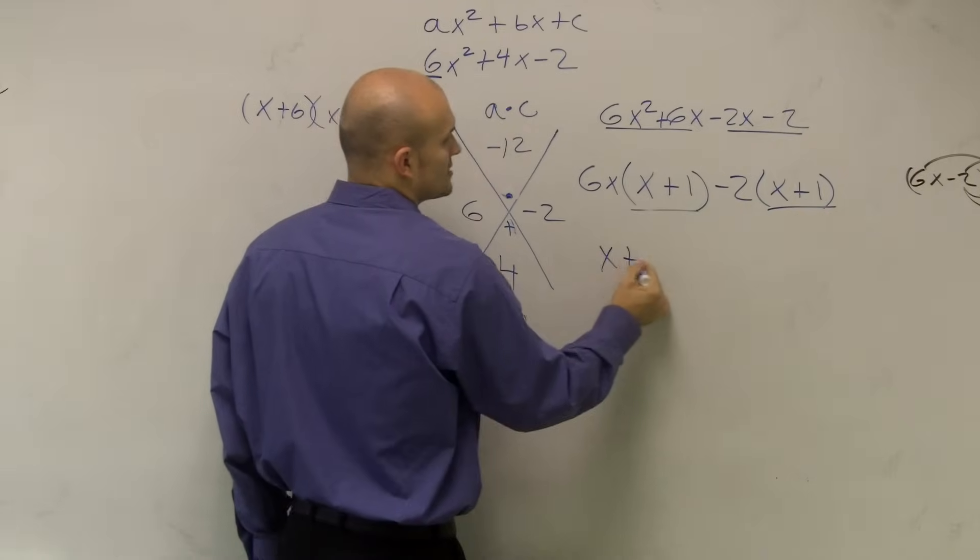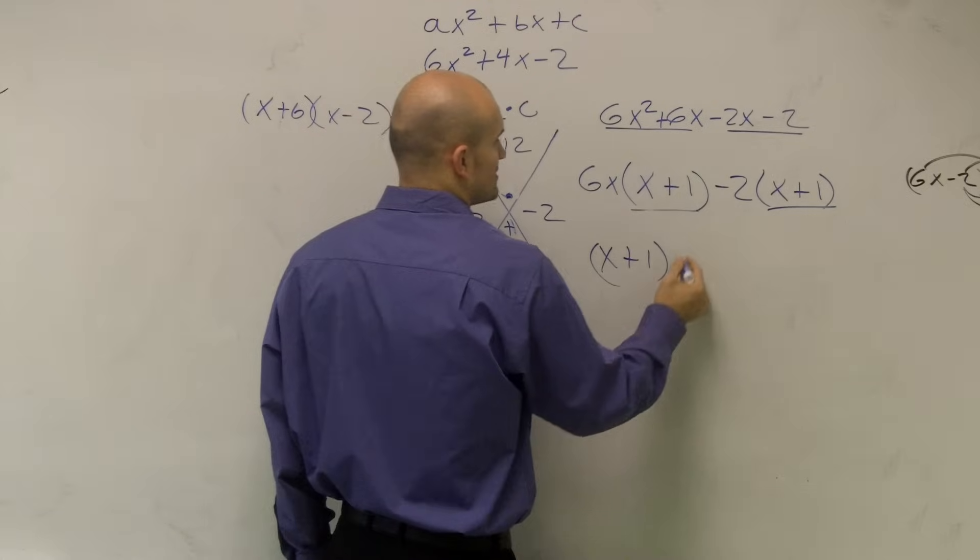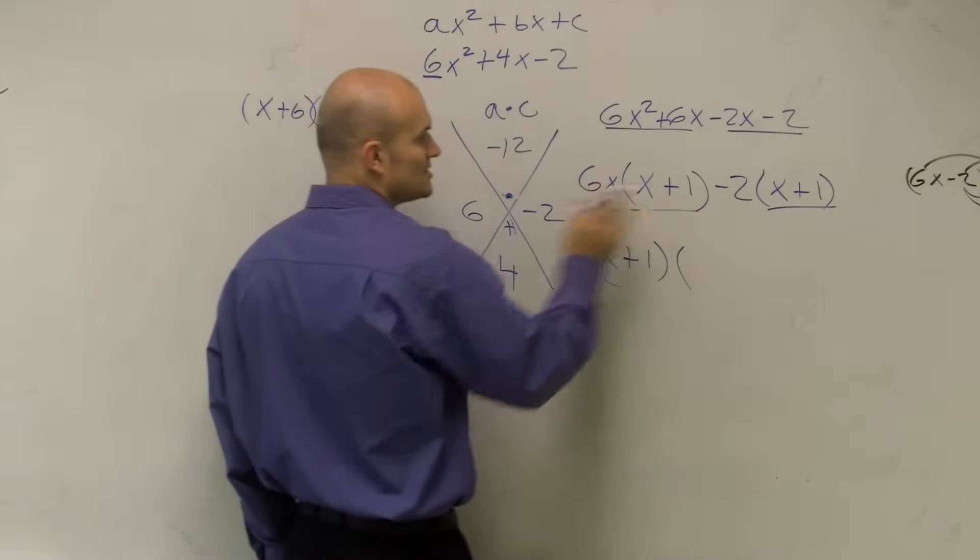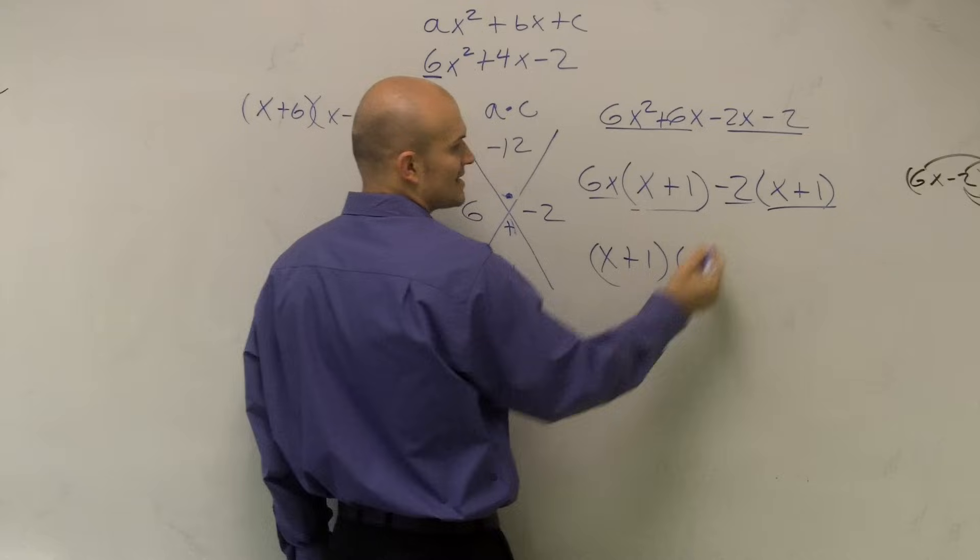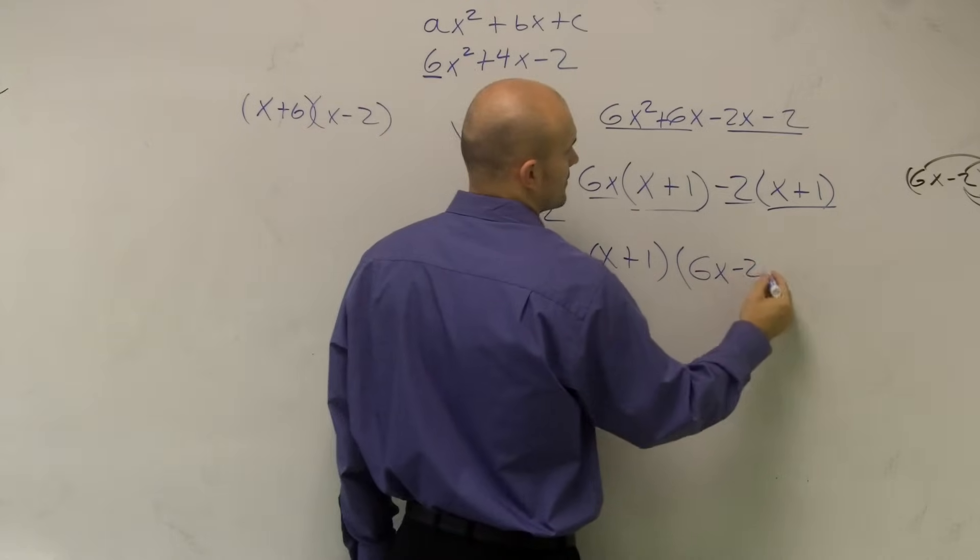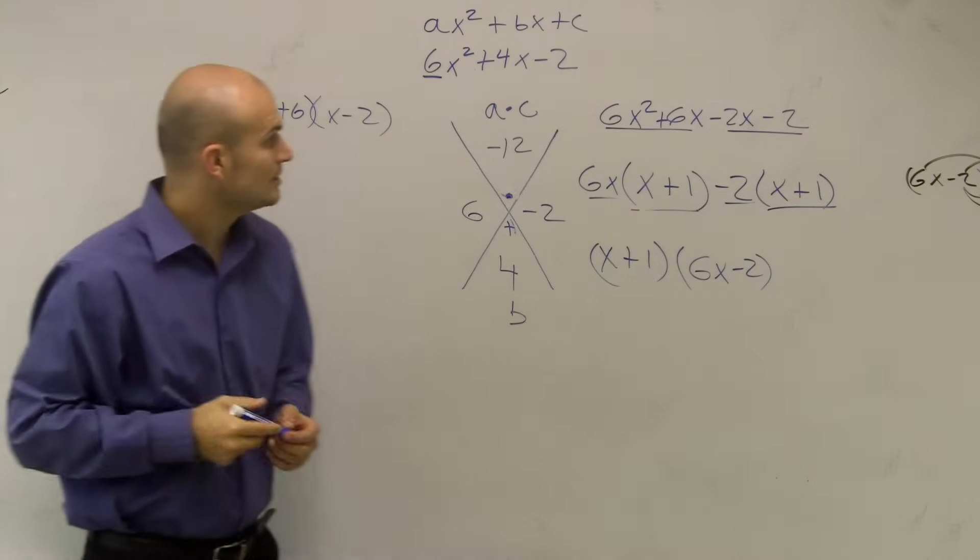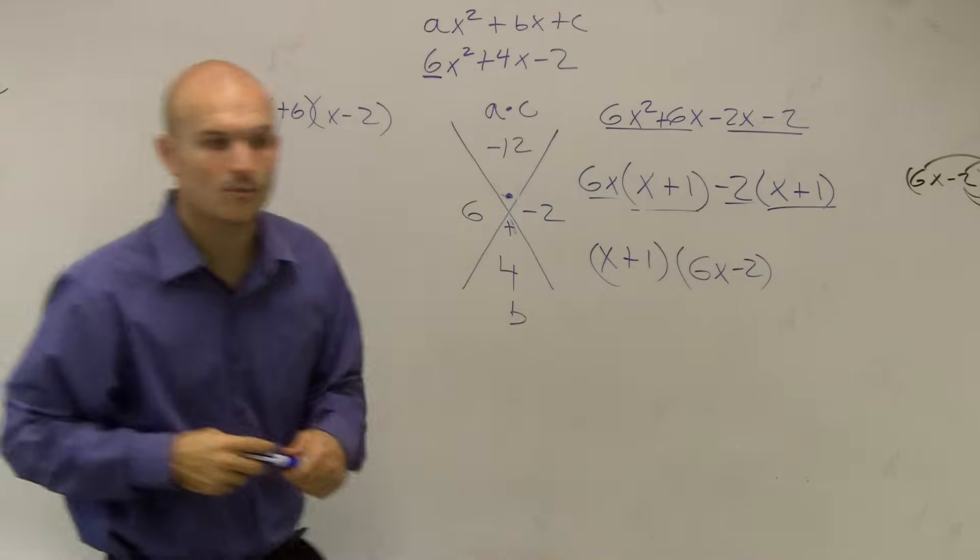I can now factor those out to give me x plus 1 times, after I factor these two out, I'm left with a 6x minus 2. And that's how you factor when you have an a greater than 1.